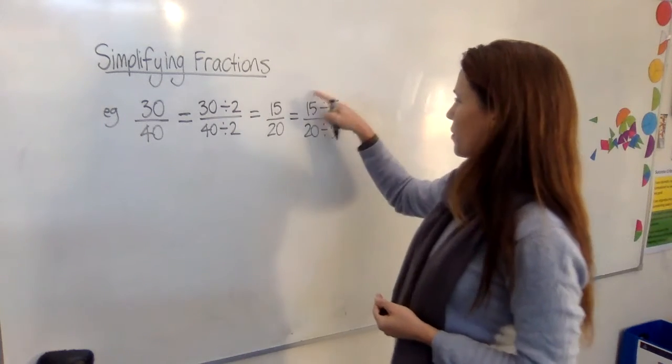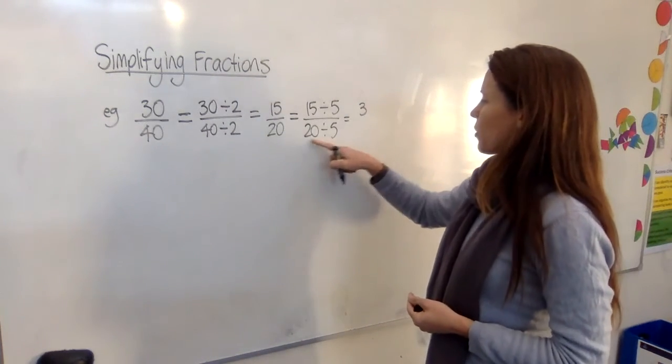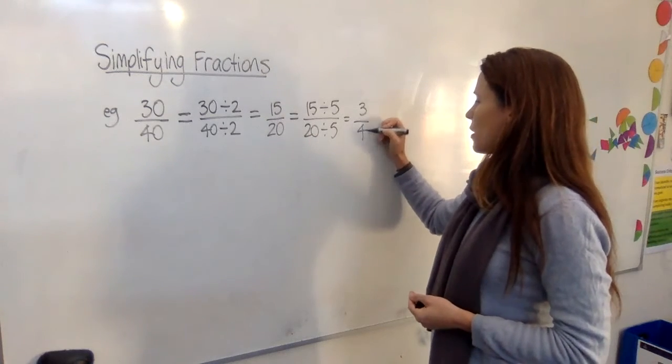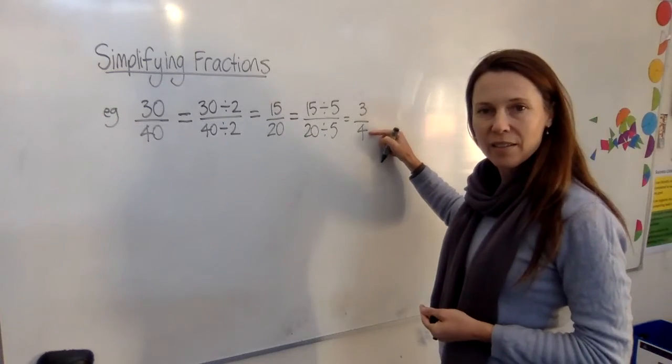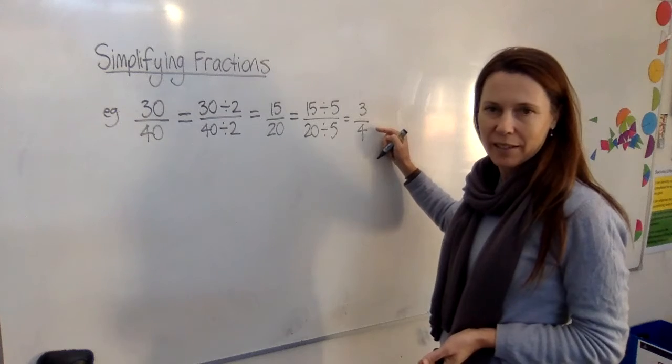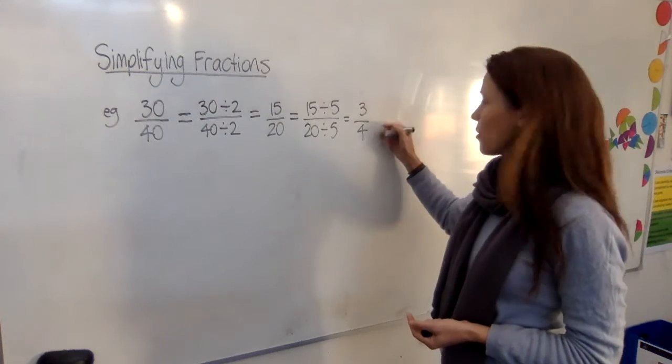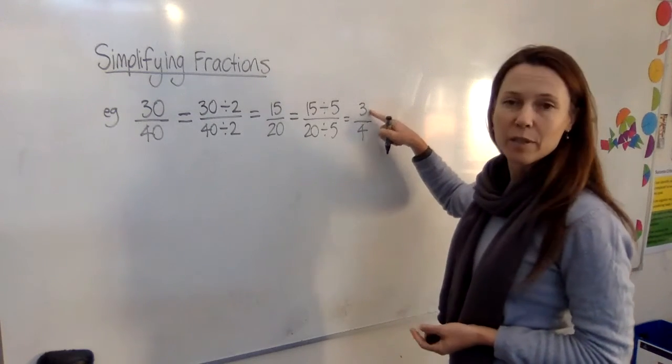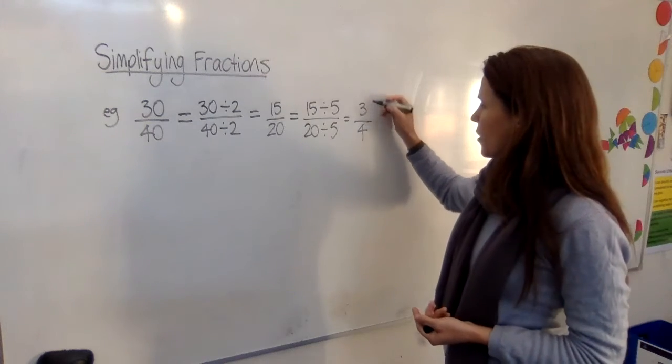All right, what do we get? 15 divided by five is three. 20 divided by five is four. Now, do these share any factors? Only one. Okay, so it's as simple as it can get because we've got them all the way down until one of them is a prime number. So this is our answer.